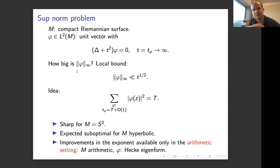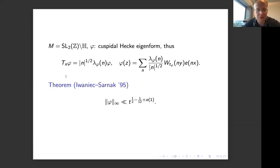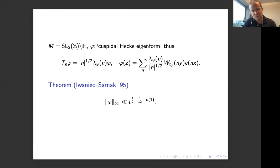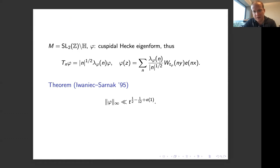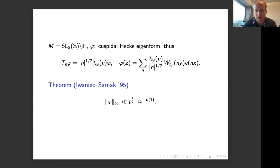There's a pioneering result going back almost 30 years due to Iwaniec and Sarnak. They consider, for example, the modular surface M — the quotient of the upper half plane by the modular group — and take phi to be a cuspidal Hecke eigenform, satisfying an eigenfunction condition under the Hecke operators. This determines phi up to a scalar from its eigenvalues, throwing out the multiplicity issue. Assuming these conditions, they showed an improvement where the exponent one-half is reduced by one-twelfth, up to something shrinking as the curve grows to infinity.